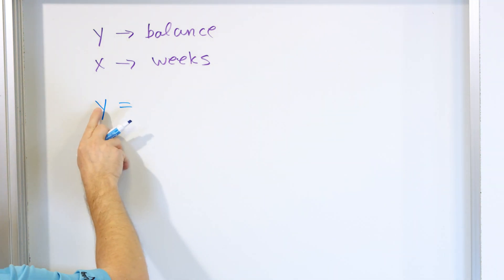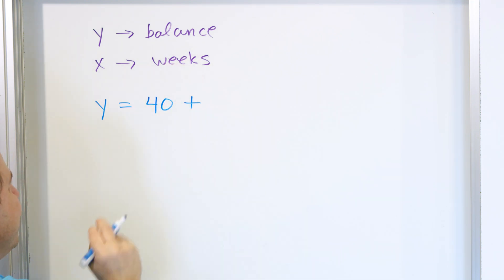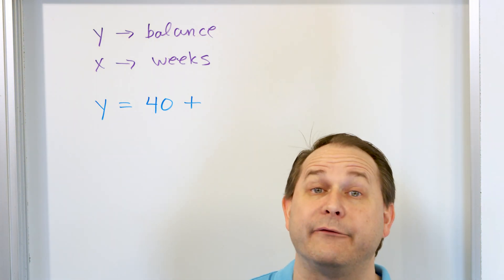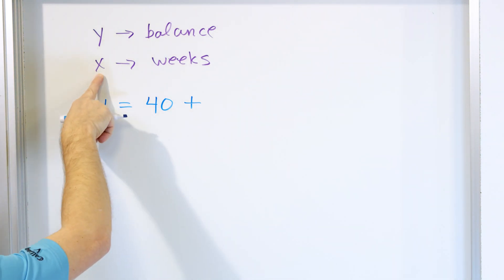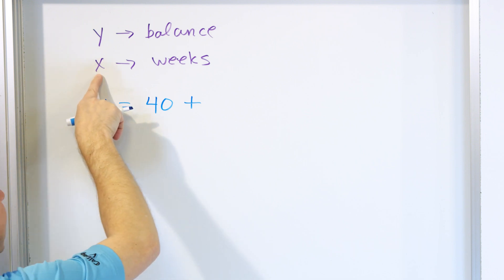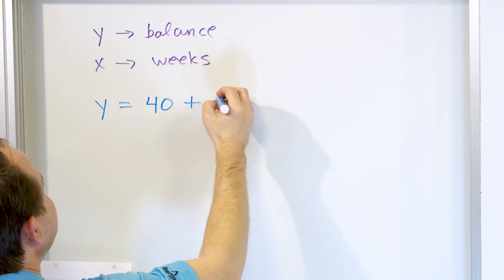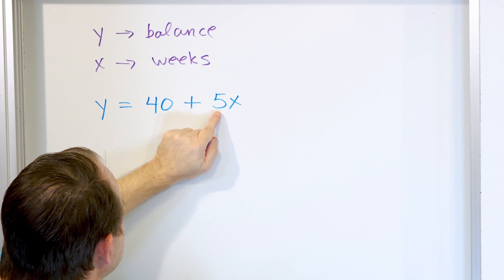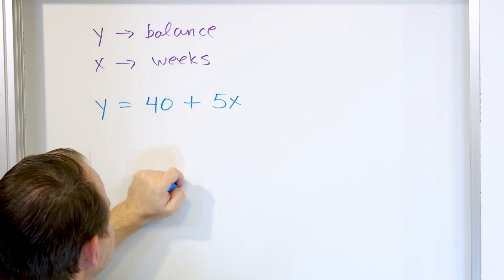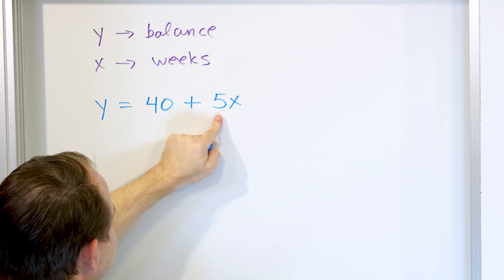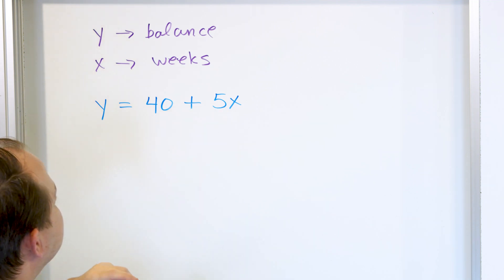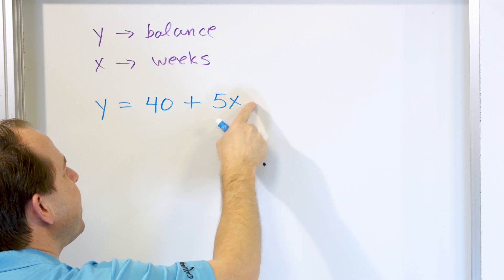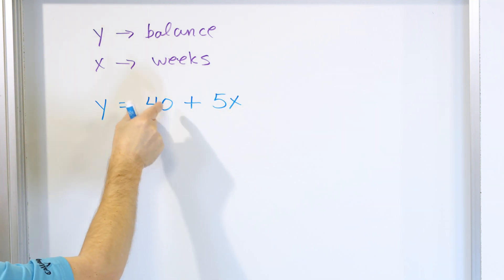The total balance in her bank account starts at $40, but we add more money to that. She adds $5 from her allowance every week, and the number of weeks is represented by X. So if she adds $5 every week, it's 5 times X. After one week she adds $5 more; after two weeks 5 times 2 is $10; after three weeks 3 times 5 is $15 additional dollars, and so on.